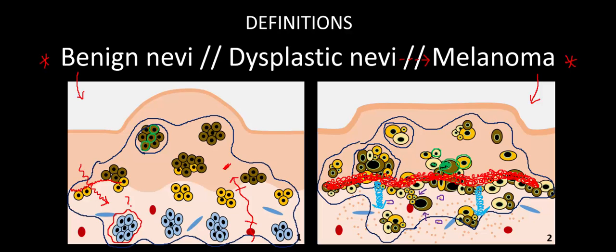In fact, there's a specific measurement often taken called the Breslow thickness. Essentially, they measure from a place in the epidermis to the point of deepest invasion into the dermis or even below that. It turns out that that depth of invasion is the most important prognostic factor for these patients — essentially, the deeper the invasion, the worse the prognosis.